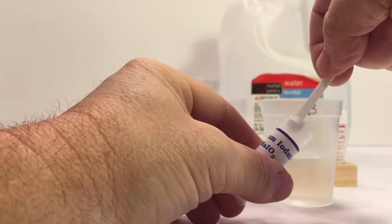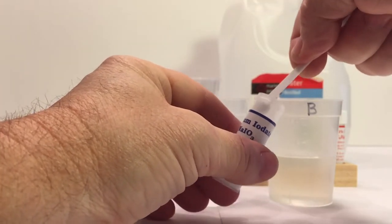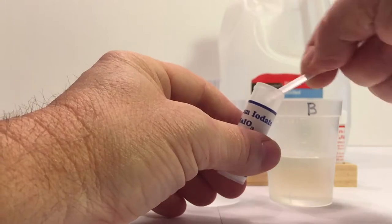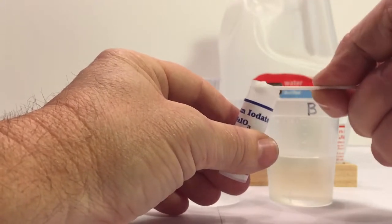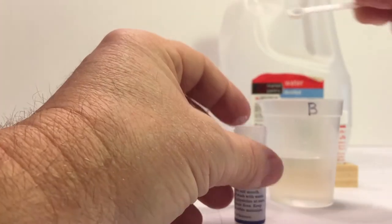And then in cup A, I'm going to add two small scoops of the sodium iodate. The little measuring cups come with the kit, so it makes it very easy. And you're going to put those into cup A. You can just pack that down a little bit and then you're set.